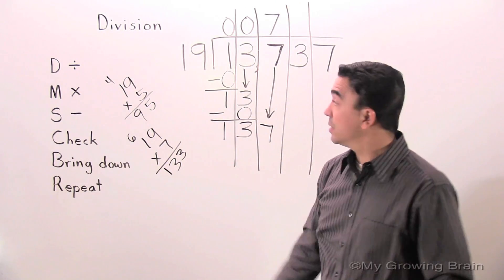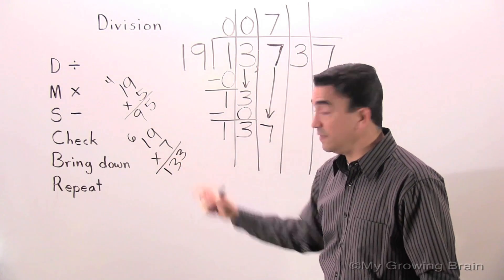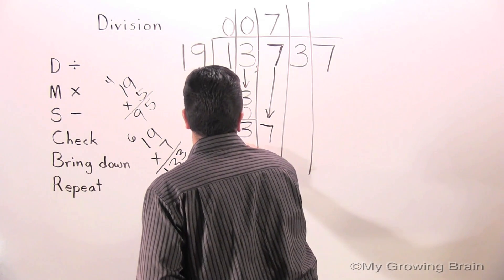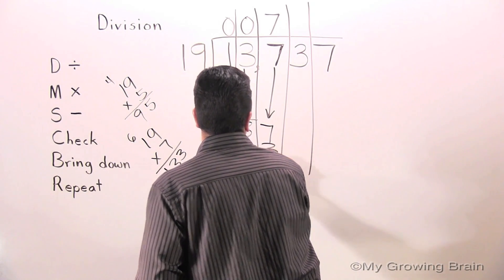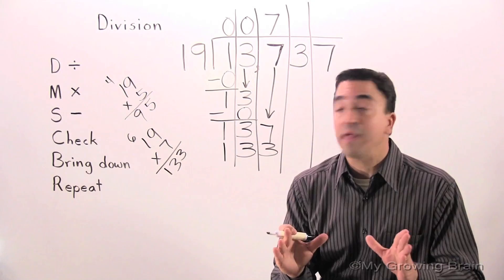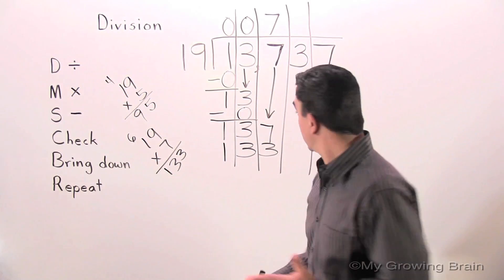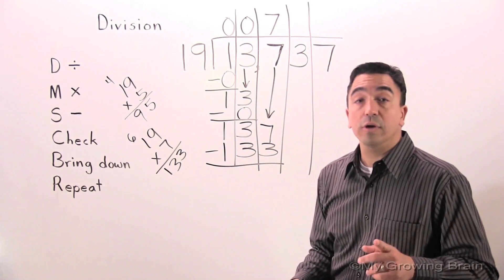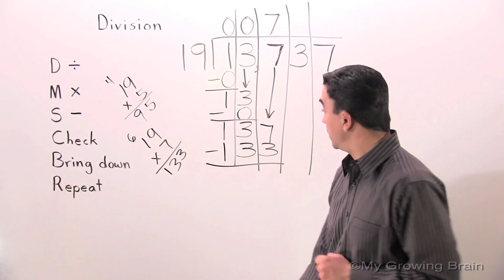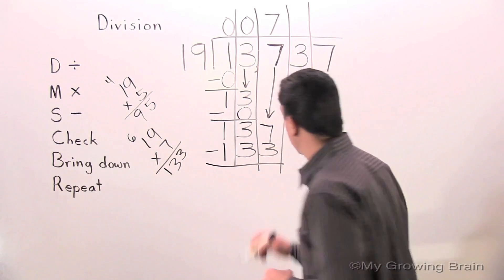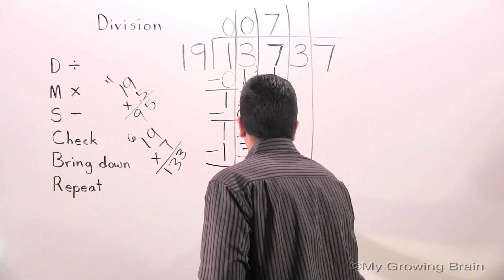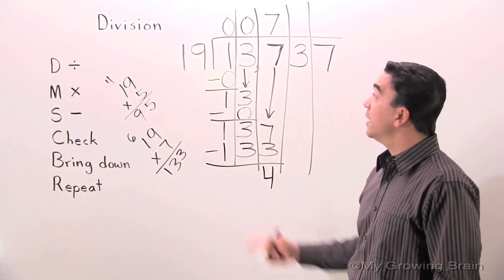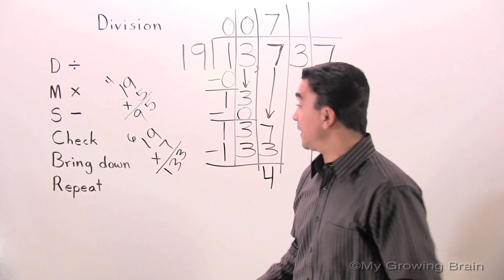Next step. Multiply. 19 times 7. 19 times 7. 133. Next step. Subtract. 137 minus 133. 4. Next step. Check. 4 is less than 19. Keep on going. Next step.